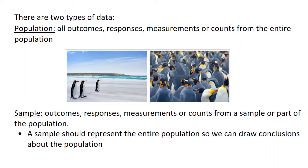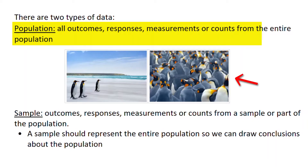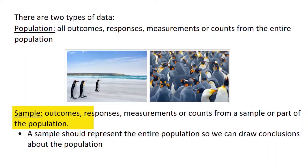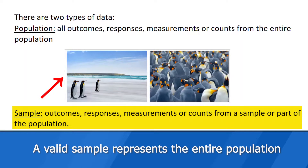There are two types of data: populations and samples. The population is everything that you're interested in — your topic of interest — so all the outcomes, all the responses, all the measurements or counts from the entire population. A sample is a subset — that's the outcomes, the responses, the measurements, but just from a part of the population. Sampling is a science really all by itself, and it's quite challenging to get a sample that represents an entire population so that we can draw conclusions about the population.